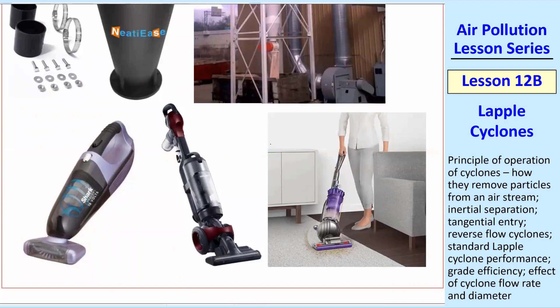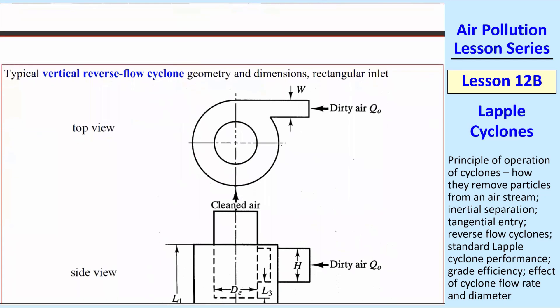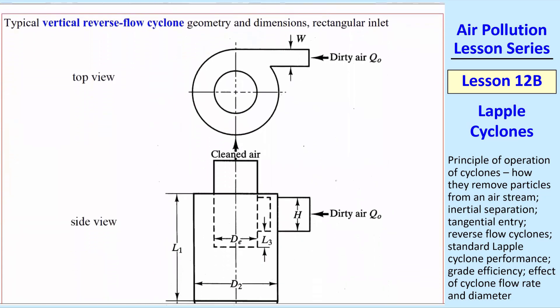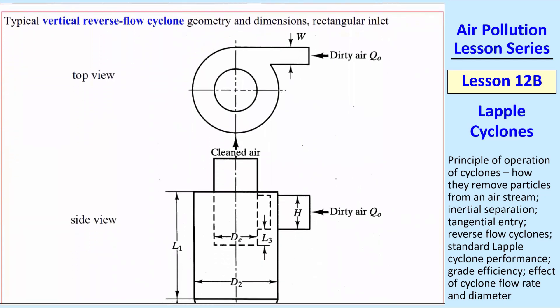A typical reverse flow—there are straight through cyclones, which I'm not going to talk about, but the common ones are vertical reverse flow cyclones. The geometry is such that looking at the top view, in this case, these have a rectangular inlet. So the inlet is of width W and height H, because we're looking down. So that's what that looks like if you look at the cross-sectional area. So that's the inlet.